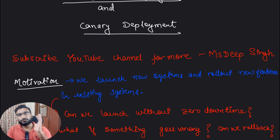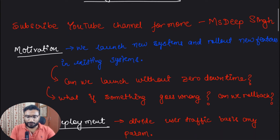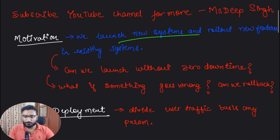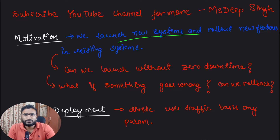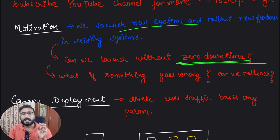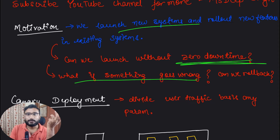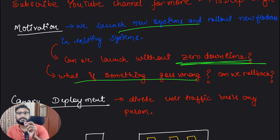The live traffic should continue unhampered. The functionality we are providing should not be hampered. So what we are basically trying to do is launch a new system and roll out new features. The main motivation is that we don't want any downtime. Anything we are launching in production — we don't want any downtime, customers should not be impacted.